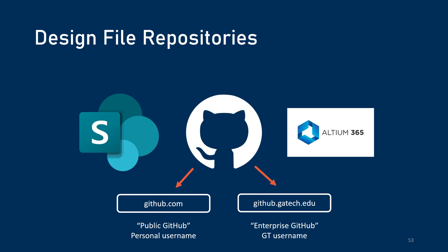Git is a big resource we use for both coding and some electrical CAD. We have GitHub.com, or what we call the public GitHub, for some projects — that involves creating an account and using your personal username. We also have the Enterprise GitHub, which is a separate website where you use your Georgia Tech email. A third option is Altium 365 — Altium is a sponsor of the group, and for some electrical projects we manage them through Altium 365, which provides an environment where we can easily collaborate on ECAD projects like schematics and circuit boards.